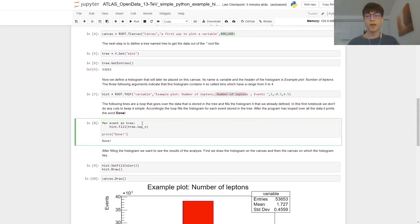So to populate our histogram, we then need to loop over all of those entries. So we do for event in the tree, hist.Fill, and tree.lepton_number. So we're going to fill our histogram with the lepton number of our data inside the tree. Then we just print done to see that we finish with the for loop.